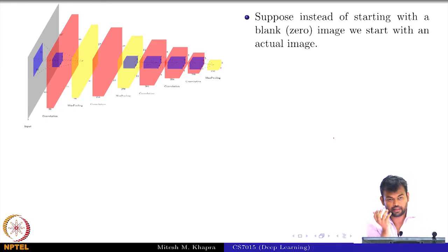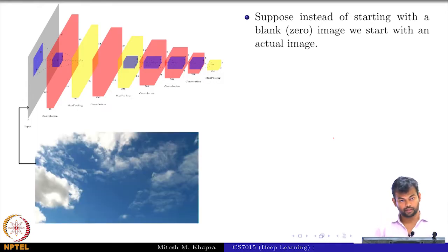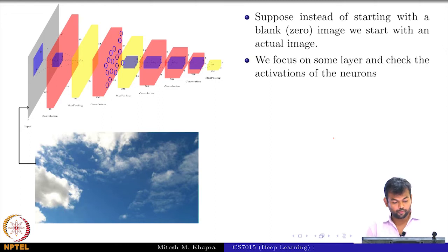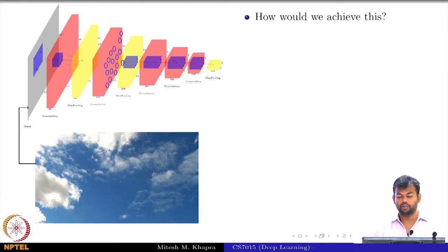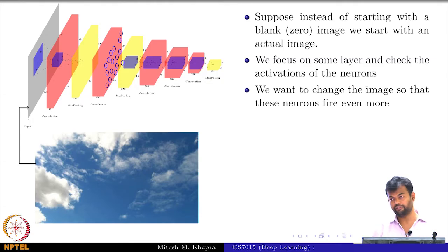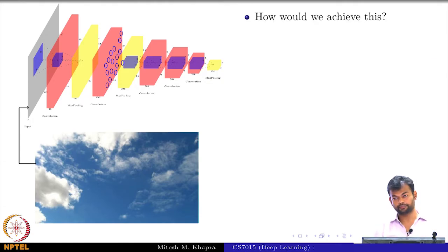So here is the idea. So far we were seeing that if we start from a blank image, then we could suitably modify it by constructing an optimization problem whose parameters are the pixels of the image and we can modify the image so that it starts looking like a certain class of interest. But now suppose instead of starting with a blank image, I start with a natural image, say a sky or any image that you have in your data center. I start with this and then I focus on neurons in some layer of the convolutional neural network.